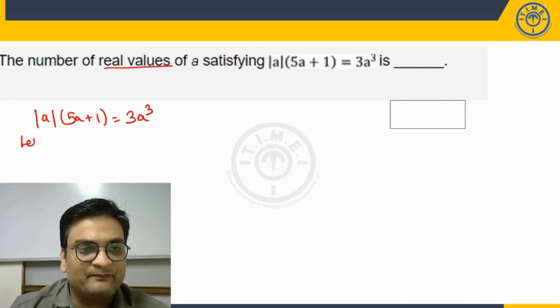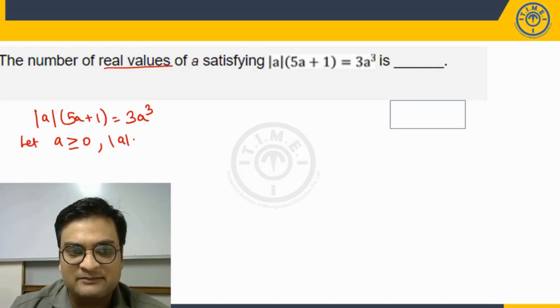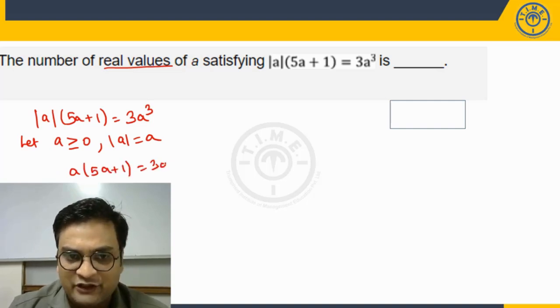Let us assume a is greater than or equal to 0, then we know that mod a becomes a and then the above equation will become a into 5a plus 1 is equal to 3a cube.